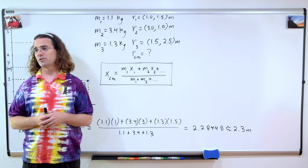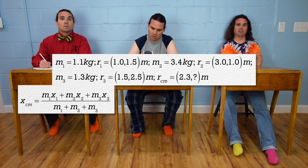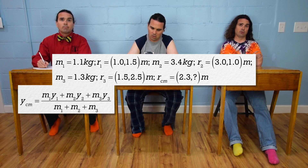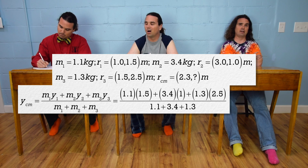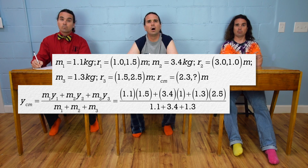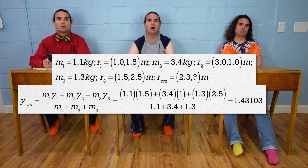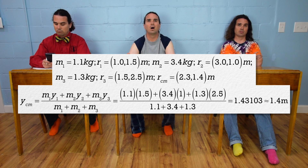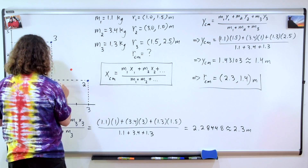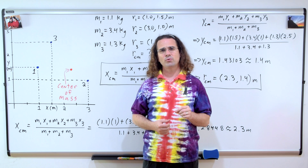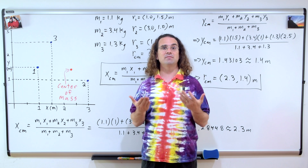Bo, please compute the y-position center of mass. We use the same equation, only replacing all of the x's with y's. So it equals (1.1 × 1.5) + (3.4 × 1.0) + (1.3 × 2.5), all divided by (1.1 + 3.4 + 1.3). That equals 1.43103, or 1.4 meters with two significant digits. Therefore, the center of mass of this three-point particle system is at the location 2.3 meters to the right of and 1.4 meters above the origin.